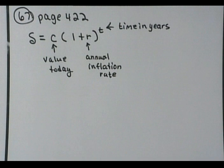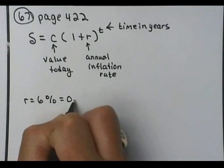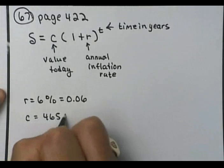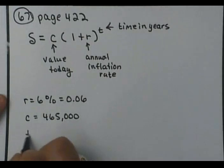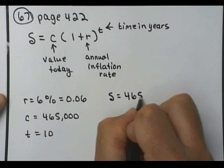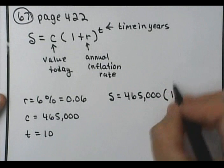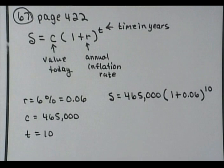So on 67, if the inflation rate is 6%, so r here is 0.06, how much will a house now worth $465,000, so c is $465,000, be worth in t equals 10 years? So now this will be s equals $465,000 times (1 plus 0.06) to the 10. Alright, so put that in your calculator there. Y'all should be able to put that one in there.